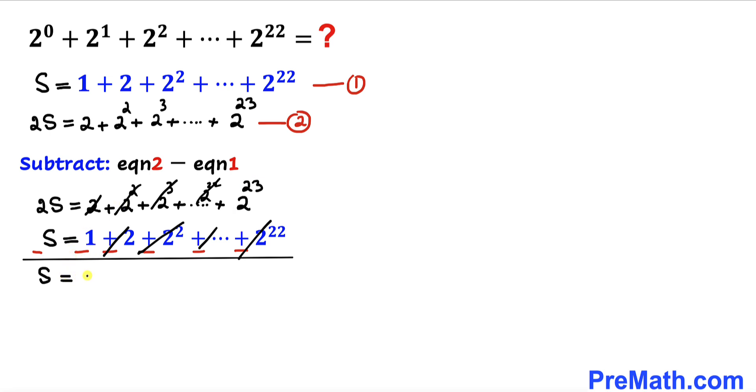And if we use a calculator, 2^23 turns out to be this big number.